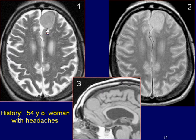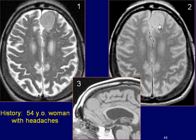The lesion is of intermediate signal intensity on T2 and slightly hyperintense on proton density weighted images with mild internal heterogeneity. The sagittal T1 weighted image demonstrates the midline frontal mass lesion as isointense to the brain.